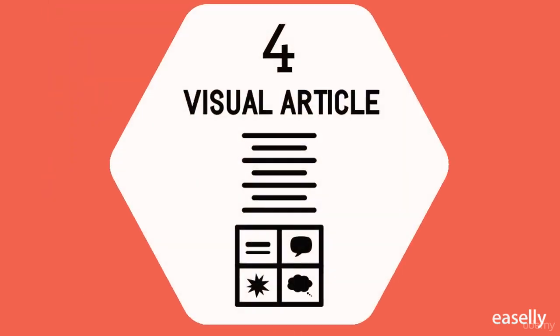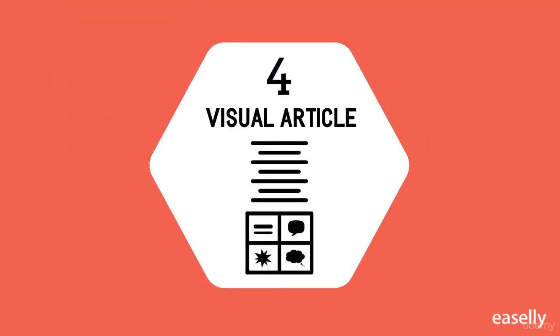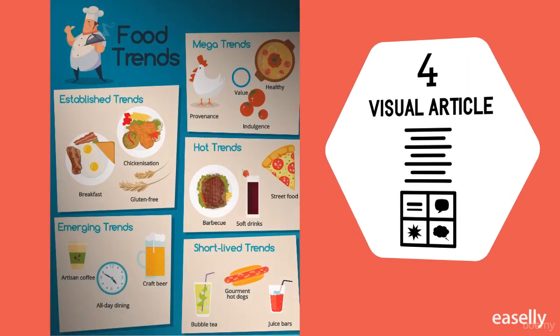Number four: a visual article infographic makes a piece of writing more visual. It is best used to cut down on text or make an article more interesting and enjoyable to consume. It also increases sharing potential through social media.